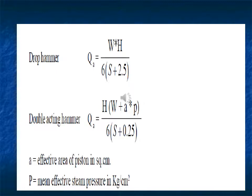For a double-acting hammer: Q_allowable = (H·(W + A·P)) / (6·(S + 0.25)), where A is the effective area of the piston in square cm and P is the mean effective steam pressure in kg per cm².